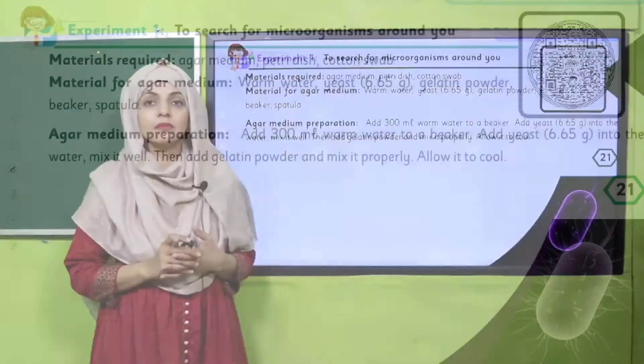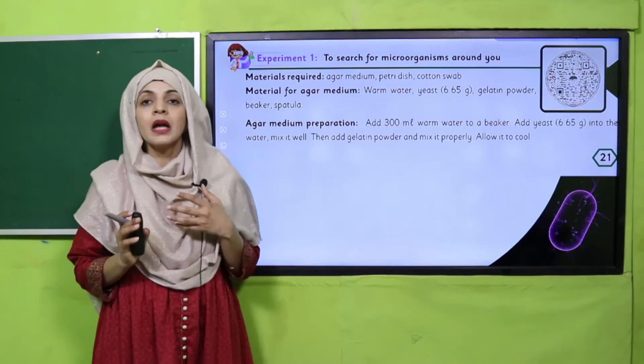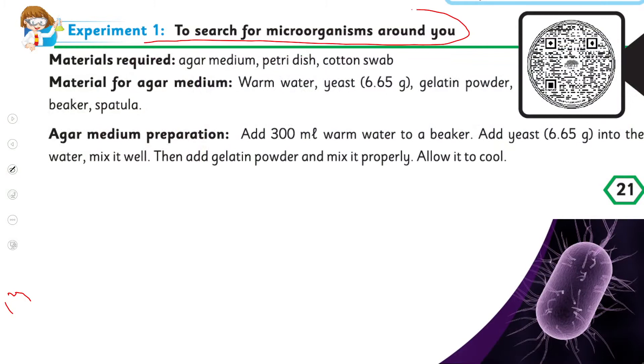I hope everybody has opened the page. Let's look at the procedure and the material that is required. To search for microorganisms around you, the material required is: agar medium, petri dish, cotton swab, and material for agar medium is warm water, yeast which is 6.65 grams, gelatin powder, beaker, and spatula.